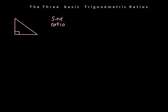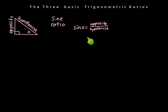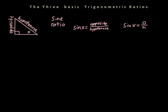The first one is called the sine ratio. The sine of angle x equals opposite over hypotenuse. Basically, if you apply sine to angle x, you get the opposite side of the triangle over the hypotenuse. Another way to write that is: sine x equals O over H. The sine of angle x equals opposite over hypotenuse — that's what you have to know.